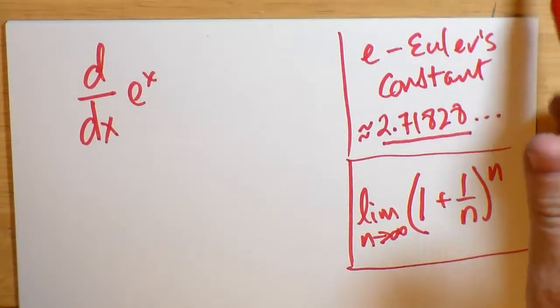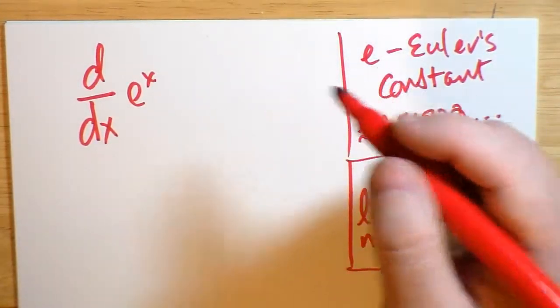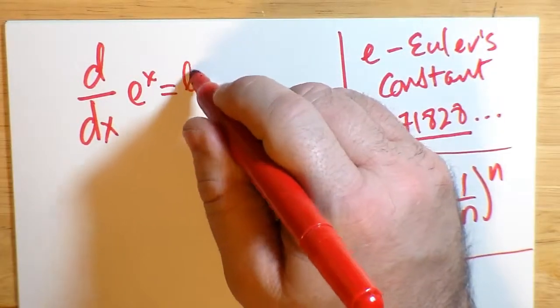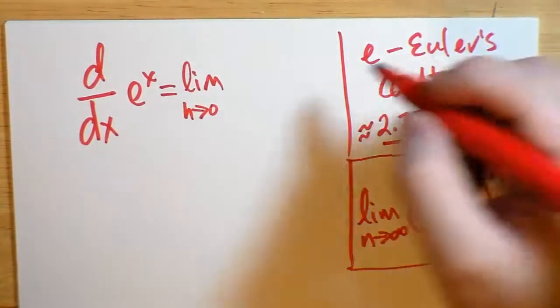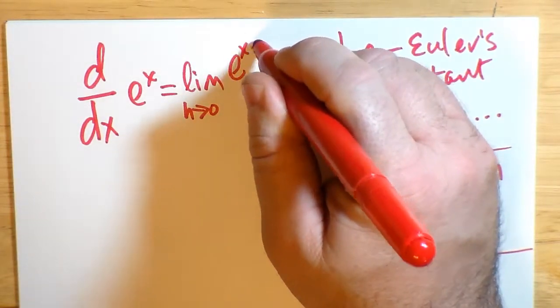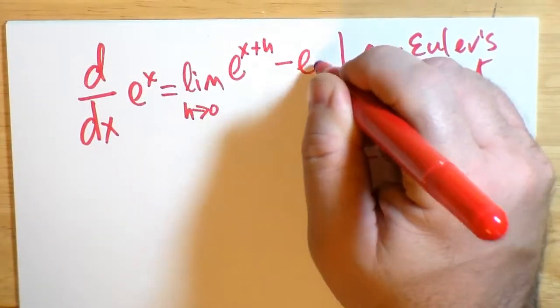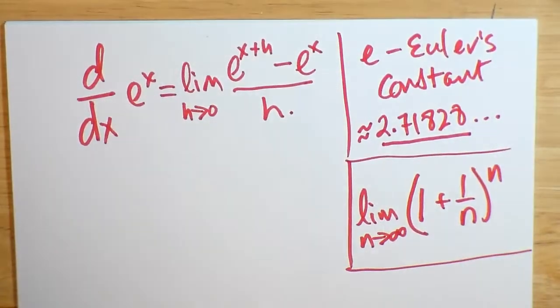Which is the base of the natural logarithms and so on. Well, d by dx of e to the x, this is equal to the limit as h goes to 0 for using the first principles of the derivative of e to the x plus h subtract e to the x all over h. So that's the way it works.